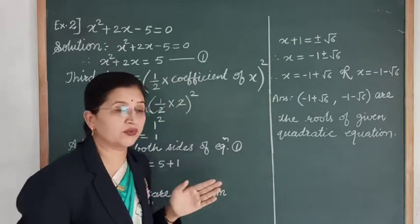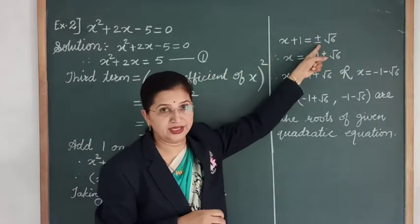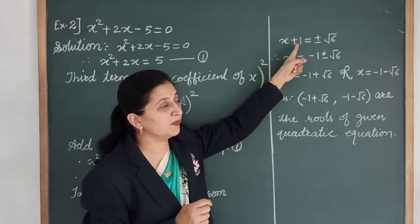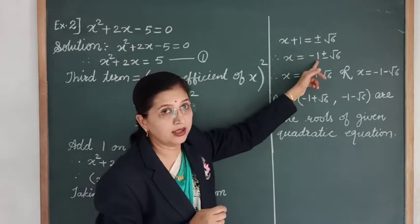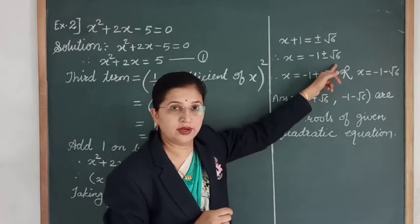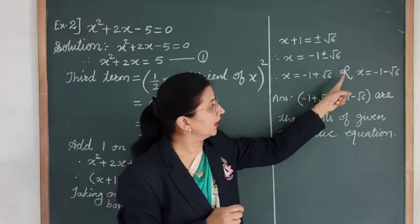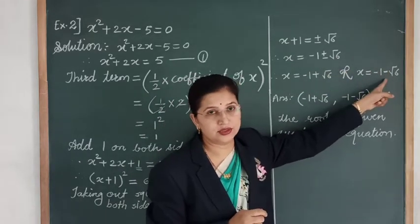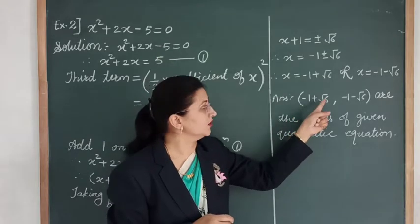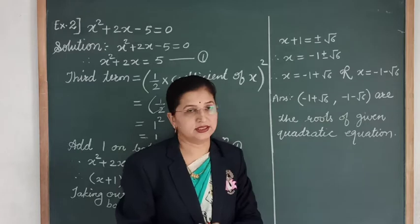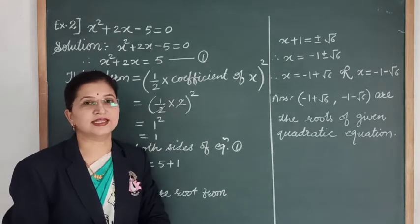Now we find the value of x. We transfer 1 to the RHS, where it becomes minus 1. So x = -1 ± √6. Separating this into two roots: x = -1 + √6 or x = -1 - √6. These are the roots of the given quadratic equation. I hope the solution is clear. Let's see another example.